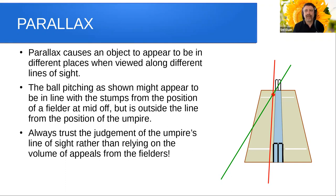The ball pitching — shown where that red dot is — might appear to be in line with the stumps from the position of the fielder at mid-off, but it is outside the line of the stumps from the position of the umpire. This is why you should always trust the judgment of the umpire's line of sight, rather than relying on the volume of appeals. The fielder at mid-off may be appealing very loudly, certain that the batter has been struck in line, whereas from the umpire's viewpoint the batter has been struck outside the line.